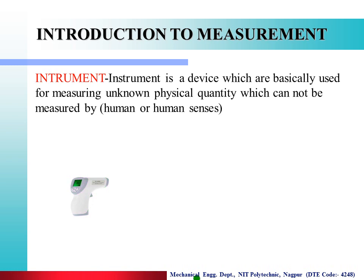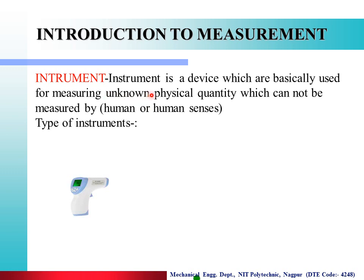Now we see what an instrument is. An instrument is a device used for measuring an unknown physical quantity which cannot be measured by human senses alone. For example, like an infrared thermometer — as seen during COVID — you cannot directly measure a human body's temperature by touch, so you use an infrared thermometer to sense it. That unknown physical quantity is temperature, and the instrument measuring it is the infrared thermometer.